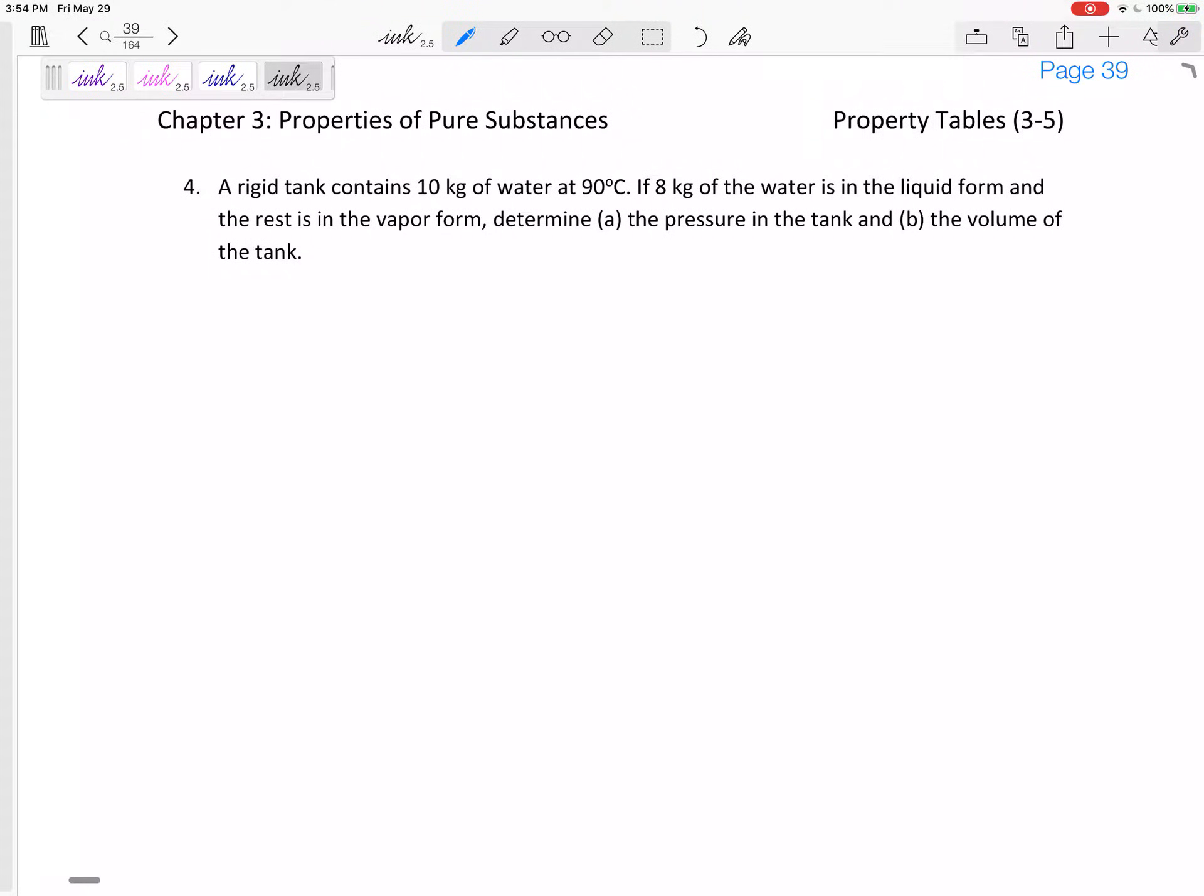All right, so let us practice and look at problems that have liquid vapor mixtures. A rigid tank contains 10 kilograms of water at 90 degrees C. If 8 kilograms of water is in the liquid form and the rest is in the vapor form, that tells you it's a liquid vapor mixture, then determine the pressure in the tank and the volume of the tank.